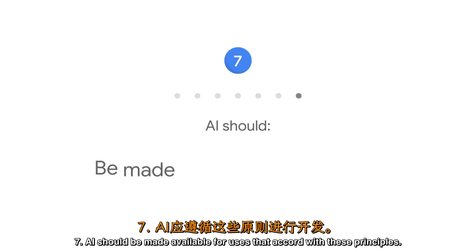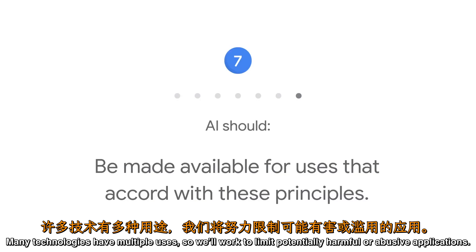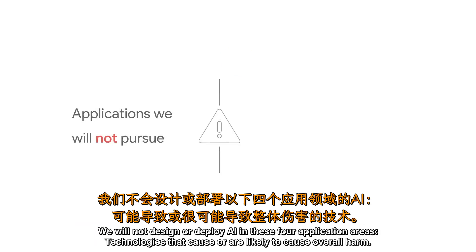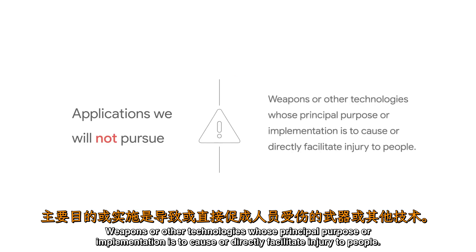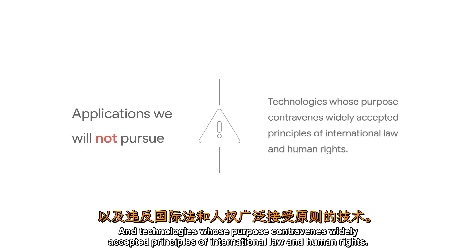Principle 7: AI should be made available for uses that accord with these principles. Many technologies have multiple uses, so we'll work to limit potentially harmful or abusive applications. In addition to these seven principles, there are certain AI applications that we will not pursue. We will not design or deploy AI in these four application areas: technologies that cause or are likely to cause overall harm; weapons or other technologies whose principal purpose or implementation is to cause or directly facilitate injury to people; technologies that gather or use information for surveillance that violates internationally accepted norms; and technologies whose purpose contravenes widely accepted principles of international law and human rights.